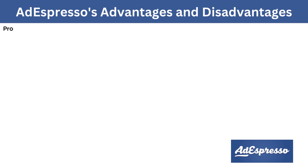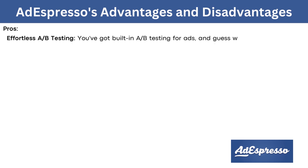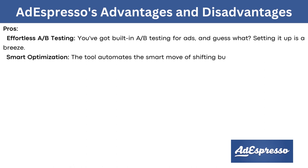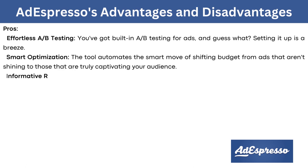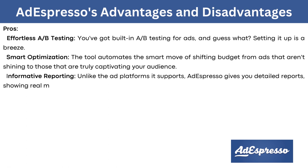The pros of AdEspresso: Effortless A/B testing — you've got built-in A/B testing for ads, and setting it up is a breeze. Smart optimization — the tool automates shifting budget from ads that aren't performing to those that are truly captivating your audience. Informative reporting — unlike the ad platforms it supports, AdEspresso gives you detailed reports showing real metrics like sales revenue and newsletter signups.